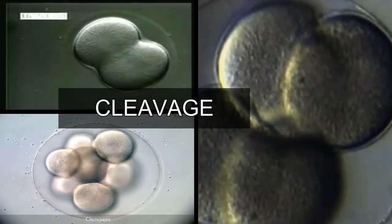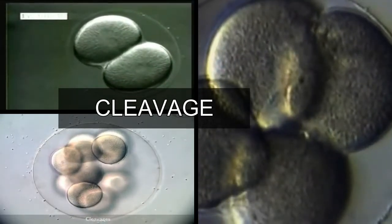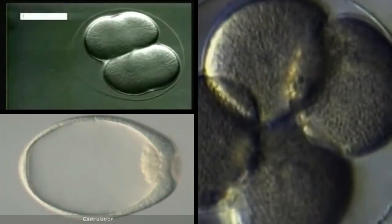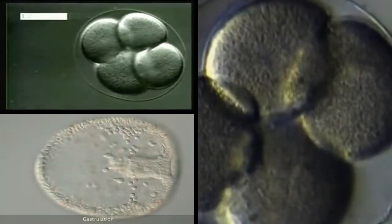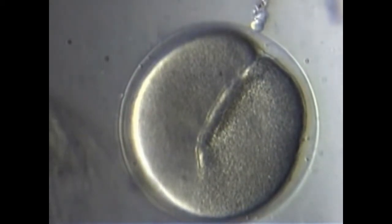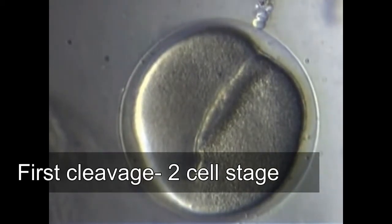After fertilization, the zygote undergoes cleavage. The sea urchin egg, like all eggs, contains an animal-vegetal axis. However, the animal pole and the vegetal pole are not readily discernible except by the fact that the egg nucleus or zygote nucleus resides near the animal pole. In the sea urchin, the entire egg undergoes cleavage, also known as holoblastic cleavage.